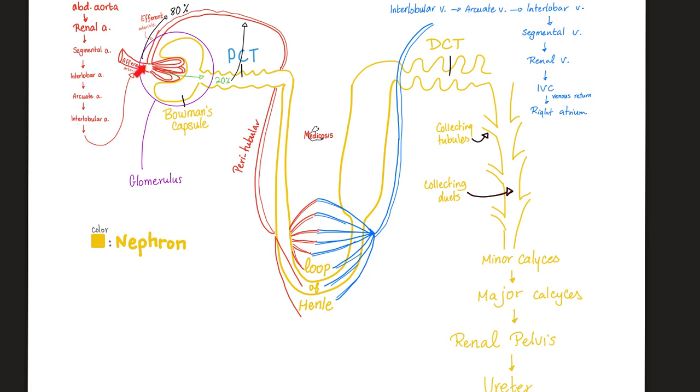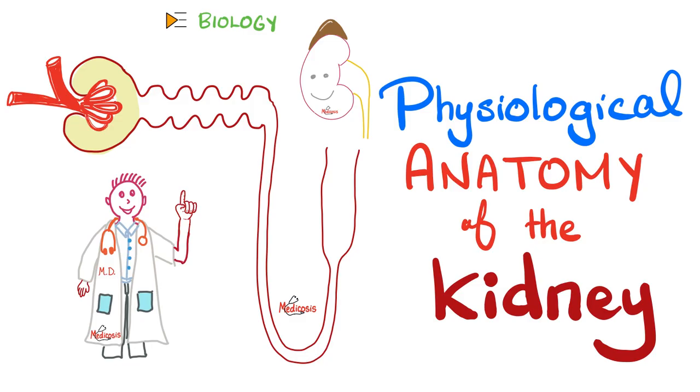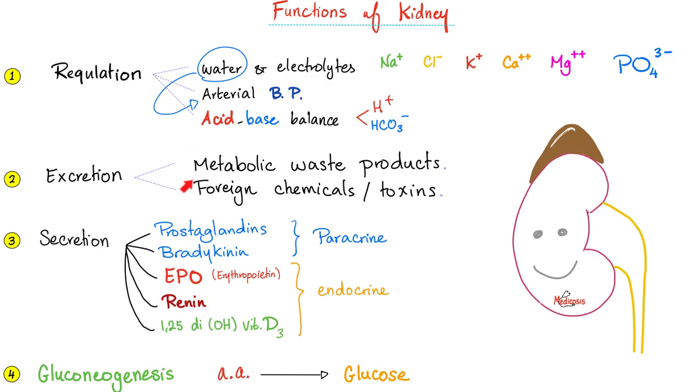Notice the difference between the glomerular capillary tuft and the peritubular capillaries. The first set of capillaries is between two arterioles. The second set of capillaries is between an arteriole and a venule. Double portal. All of the previous was the structure or the anatomy of the kidney. Now let's turn our attention to the function or the physiology. These are the functions of the kidney.